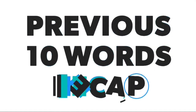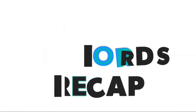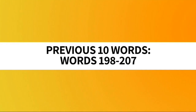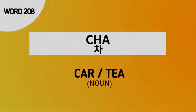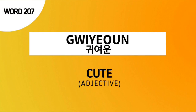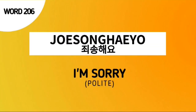Now let's proceed to the previous 10 words recap. The previous 10 words are words number 198 to 207. Don't forget our word for today — word number 208, cha, which can mean car or tea. Word 207: peon, which means cute. Word 206: joesonghaeyo, which means 'I'm sorry' in a polite manner.